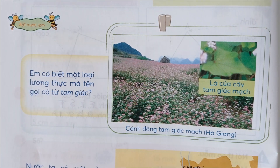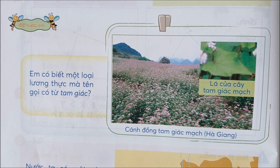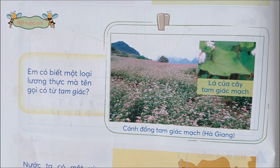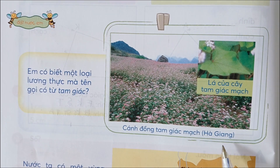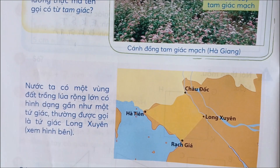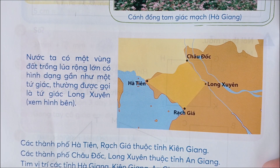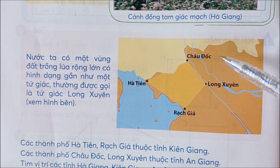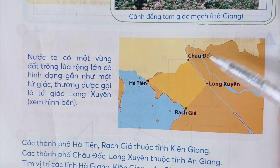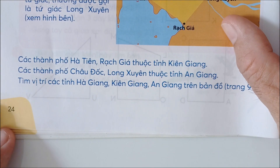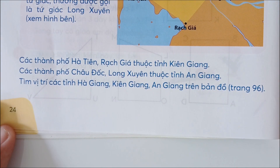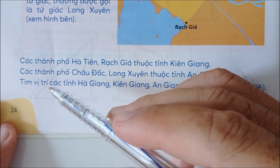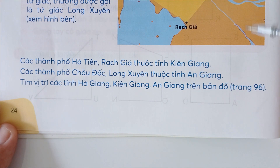Tiếp tục. Em có biết một loại lương thực mà tên gọi có từ tam giác? Lá của cây tam giác mạch, cánh đồng tam giác mạch. Nước ta có một vùng đất trồng lúa rộng lớn có hình dạng như một tứ giác, thường được gọi là tứ giác Long Xuyên. Tứ giác Long Xuyên gồm các con: Hà Tiên, Châu Đốc, Long Xuyên, Rạch Giá. Các thành phố Hà Tiên, Rạch Giá thuộc tỉnh Kiên Giang; các thành phố Châu Đốc, Long Xuyên thuộc tỉnh An Giang. Tìm vị trí các tỉnh Hà Giang, Kiên Giang, An Giang trên bản đồ.